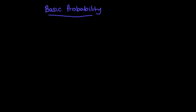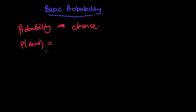So first of all, what is probability about? Probability is all about chance, the chance of something occurring or the chance of an event occurring. For example, we might say what's the probability that I throw a head when I toss a normal coin.